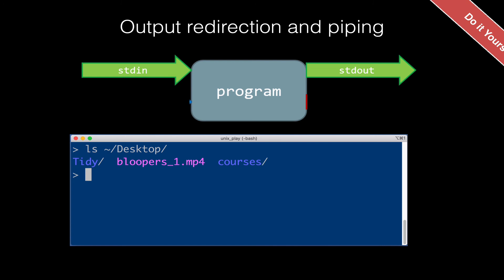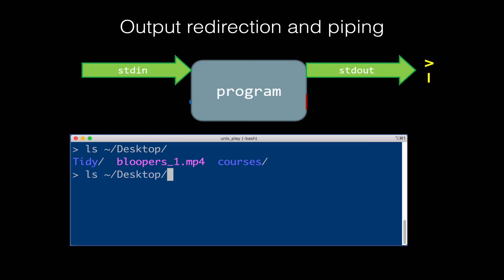Do that for yourself — you should see a directory listing of your desktop. Now, standard output doesn't have to go back to the screen. We can redirect it to a file using the greater-than symbol and then the name of the file you want. In my case, I'm calling it my_list.txt, and that will be a new file created containing the output of running the ls program.